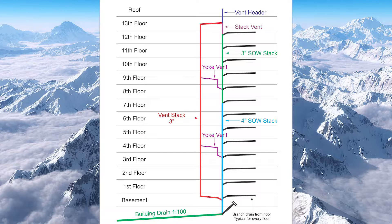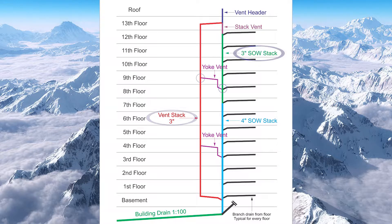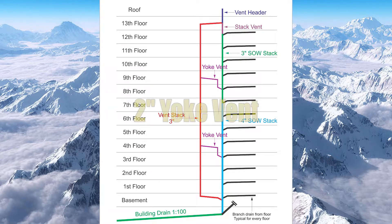If we look over here at this picture, we've got the same building from video one with the yoke vents put in place. If we look down on the ninth floor, we're going to see a yoke vent. The yoke vent is connected to a three-inch soil away stack at that height, and a three-inch vent stack. I need to be one size smaller than the smallest of those two. They're both three-inch, so the next size down is two-inch — that means my yoke vent needs to be two inches in size.